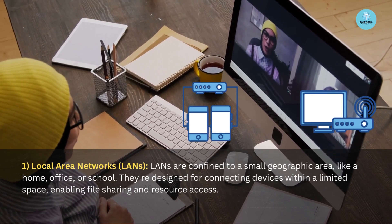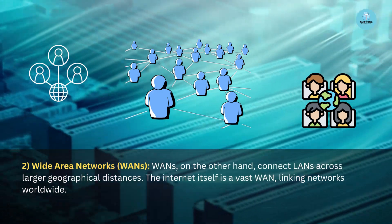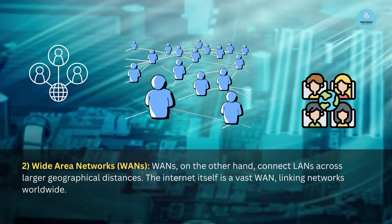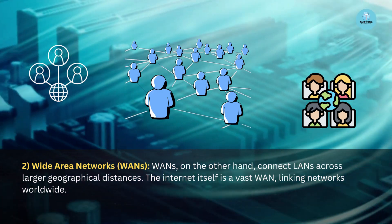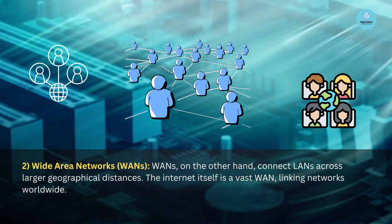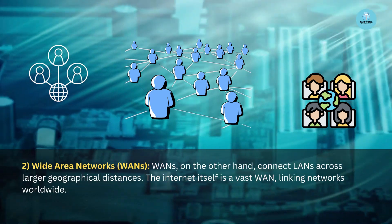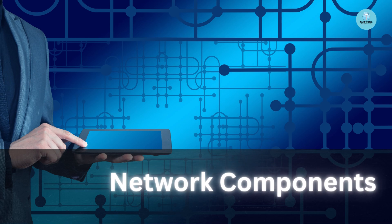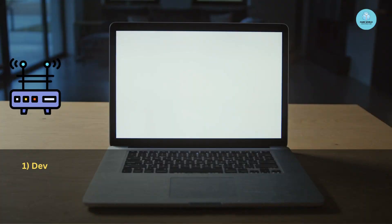Wide Area Networks, on the other hand, connect LANs across larger geographical distances. The internet itself is a vast WAN linking networks worldwide. To make a network function, various components come into play.